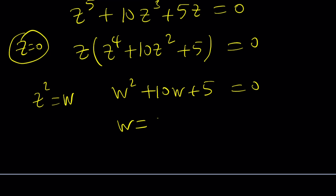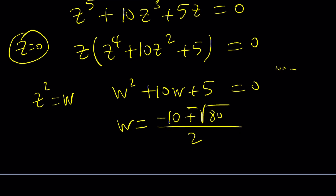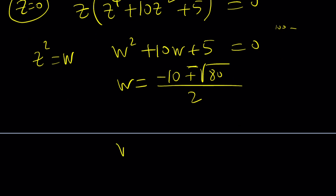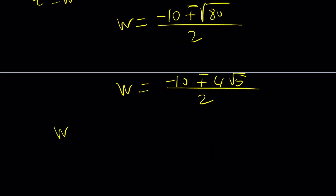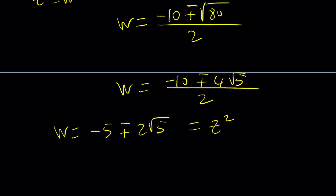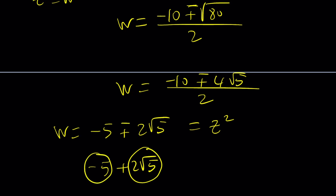Using the quadratic formula: negative b plus or minus the square root of b² minus 4ac, where b² is 100 and 4ac is 20. That's the square root of 20, which gives 4√5. So w equals (−10 ± 4√5) / 2, which simplifies to −5 ± 2√5. But since √20 < √25, both values are negative, so z² is negative — giving complex solutions. We express them trigonometrically.